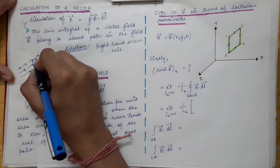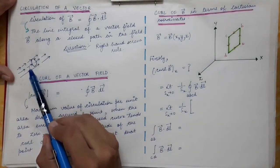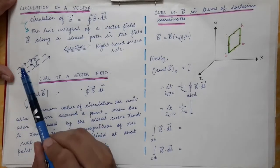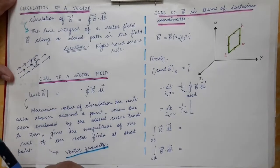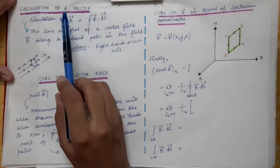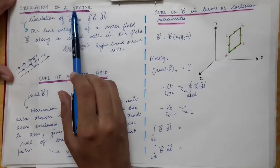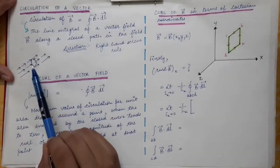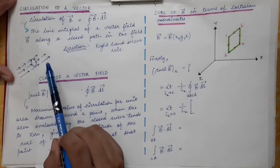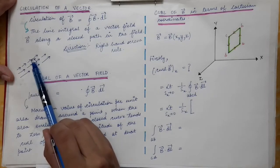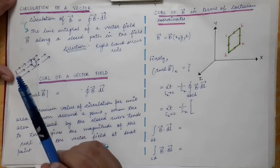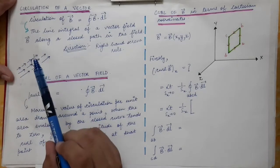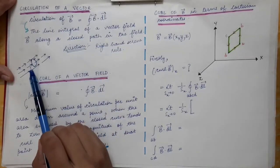We will calculate the line integral of the vector field over this closed path, moving in the anti-clockwise direction. That will give us the circulation of that vector field on this closed path. The circulation of a vector is a vector quantity and its direction is given by the right-hand screw rule.